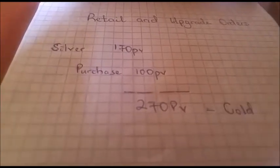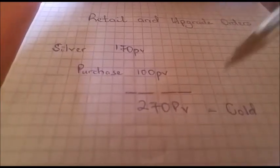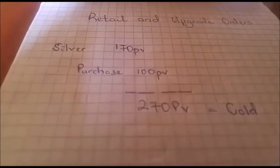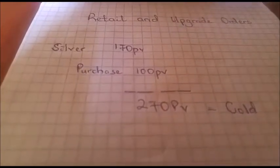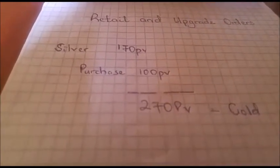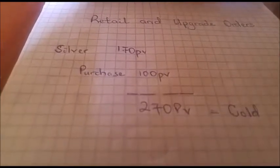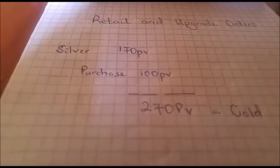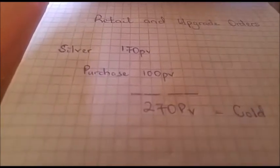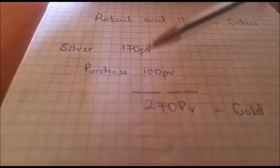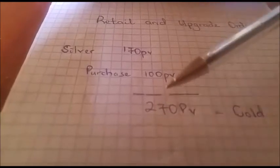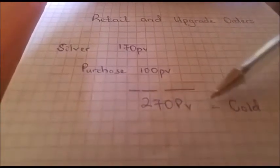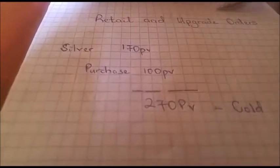Now if you were to do a retail order, that means money is supposed to be paid back to you. We're going to look at that in the subsequent videos. If you do a retail order, 170 PV will still be summed to 100 and give you 270 PV, but your status remains silver, not gold.